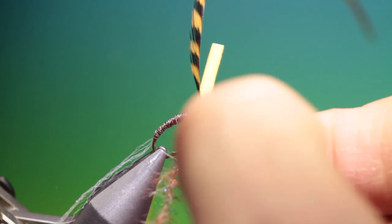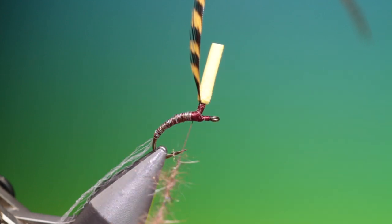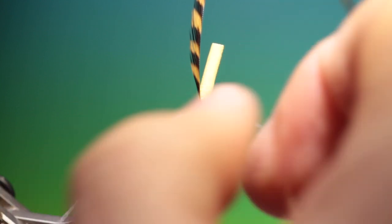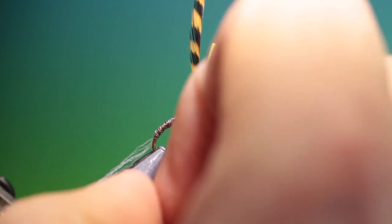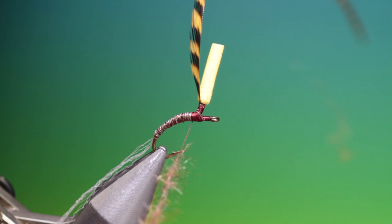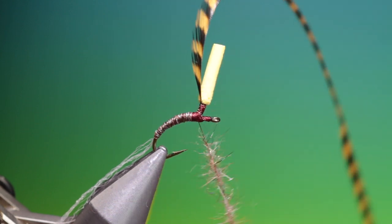Then what we can do is we can go in and just thin it out so we get a nice little spiky dubbing. And we go up here.